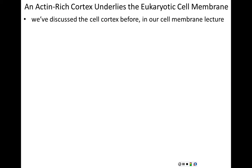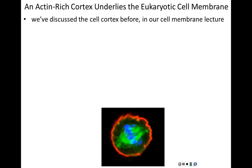The cell cortex is a topic we're already familiar with from our cell membrane lecture. Here is a fluorescent microscopy picture — microtubules stained in green are forming the mitotic spindle fibers; chromosomes undergoing mitosis are shown in blue being pulled apart; and the cell cortex is shown in red — these are actin proteins stained red. This is the underlying protein framework of the cell membrane.